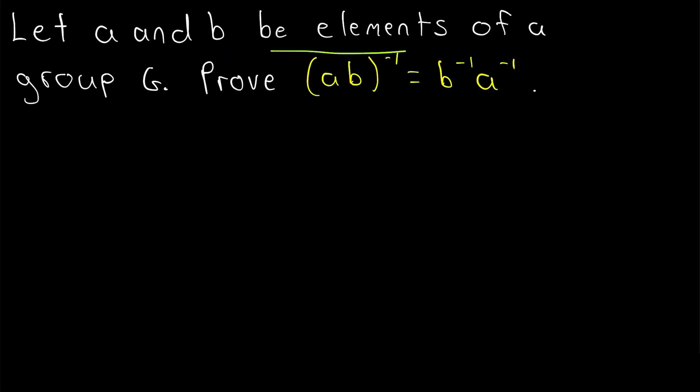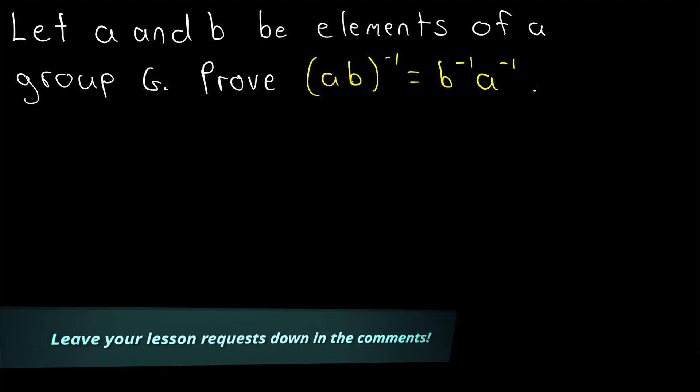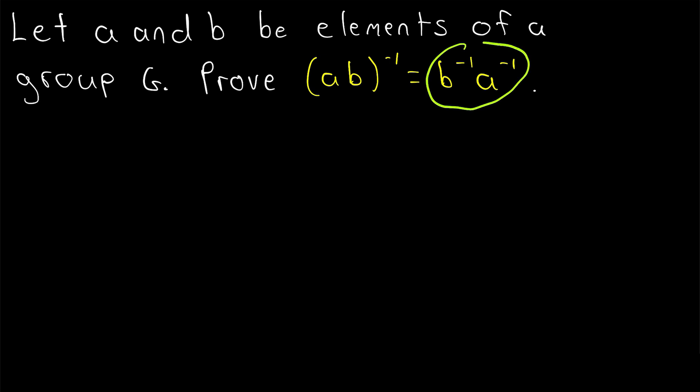Let A and B be elements of a group G. We want to prove that the inverse of the product of A and B is equal to B inverse times A inverse.